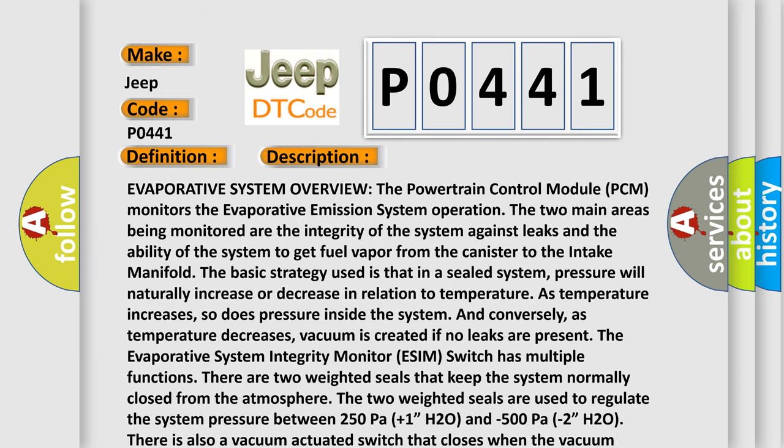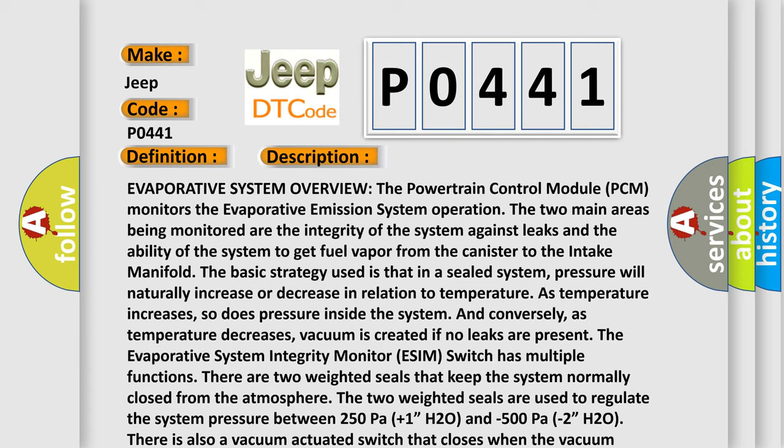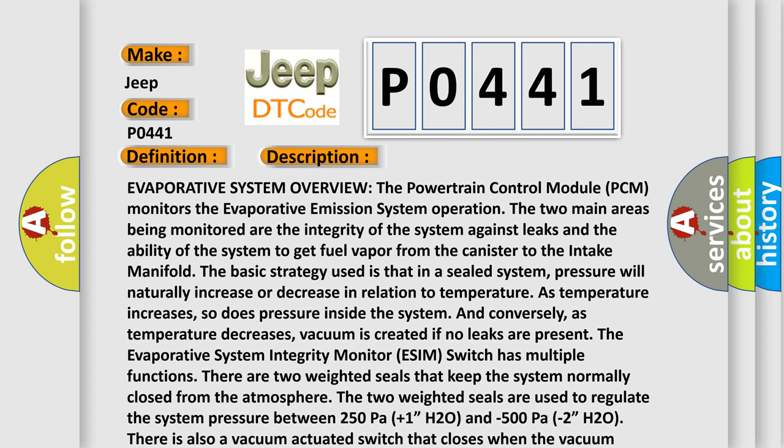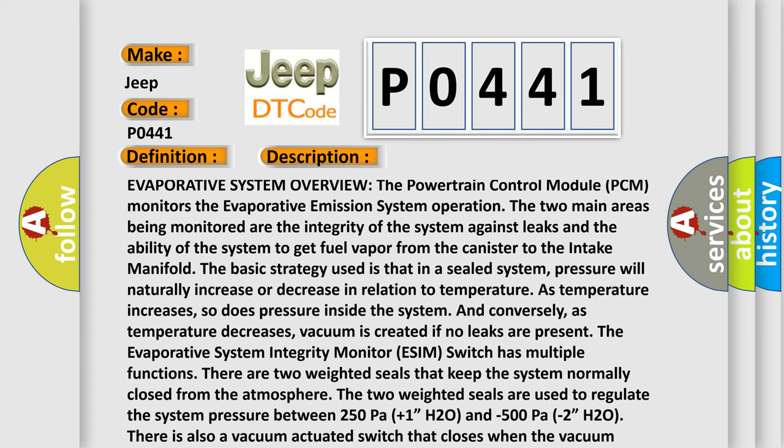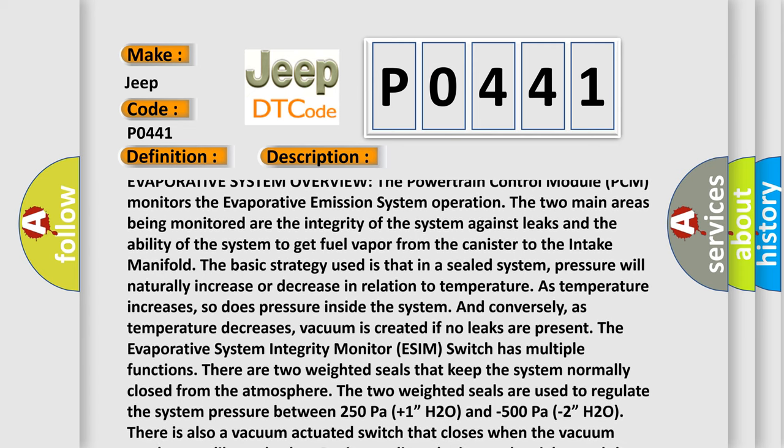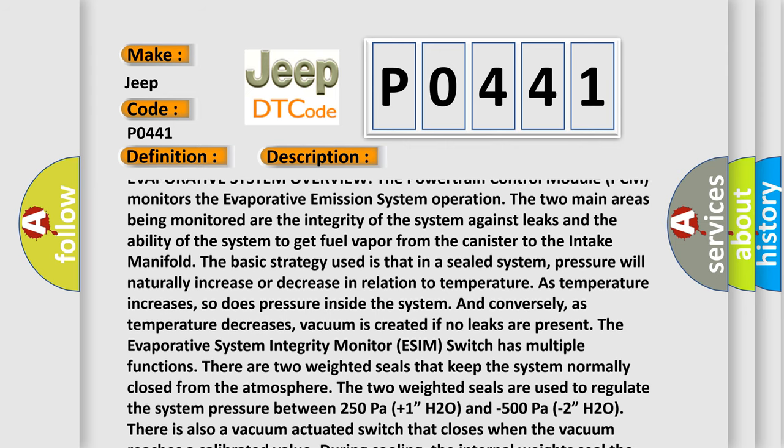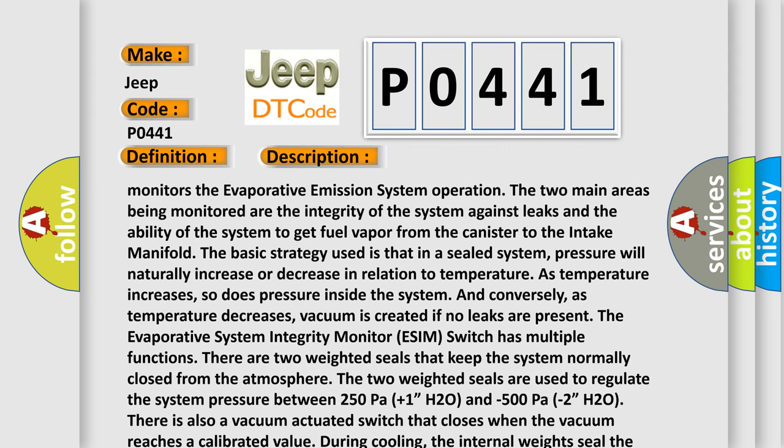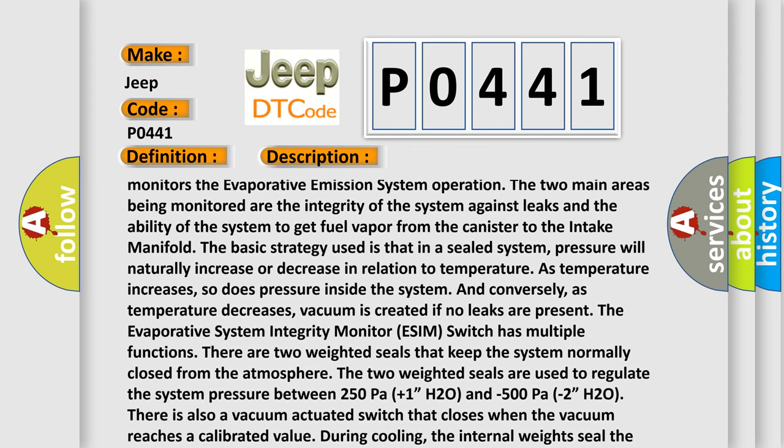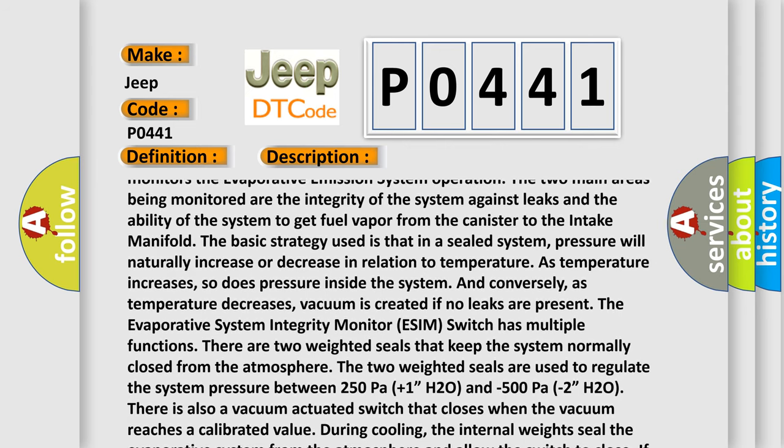Evaporative system overview: The powertrain control module (PCM) monitors the evaporative emission system operation. The two main areas being monitored are the integrity of the system against leaks and the ability of the system to get fuel vapor from the canister to the intake manifold. The basic strategy used is that in a sealed system, pressure will naturally increase or decrease in relation to temperature.